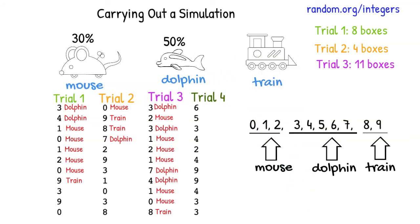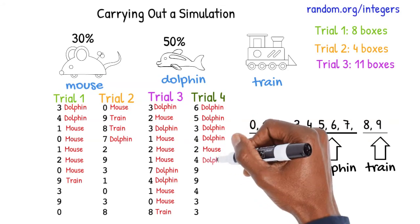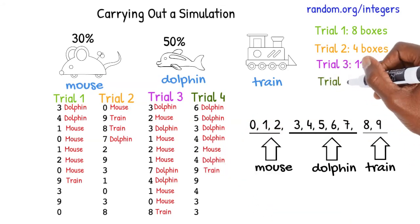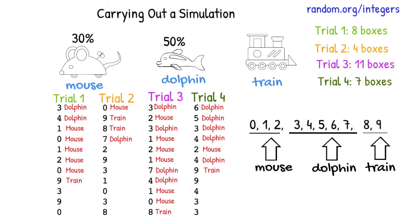For trial four, we first pick a dolphin, another dolphin, another dolphin, a dolphin again, then a mouse, followed by another dolphin, and finally a train. It took seven boxes this time to collect all three toys.